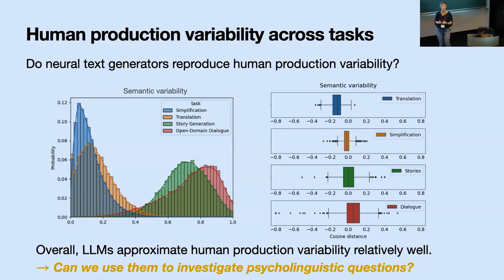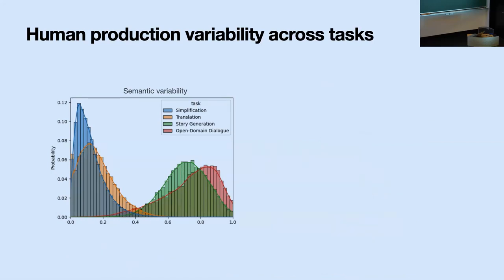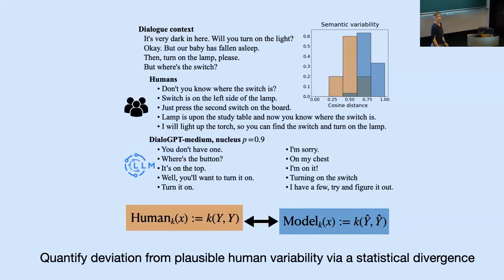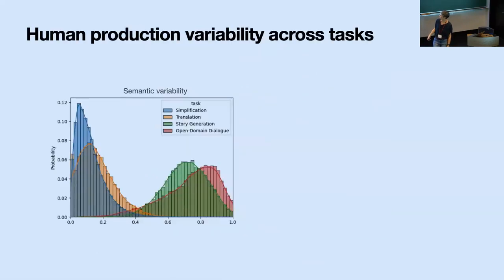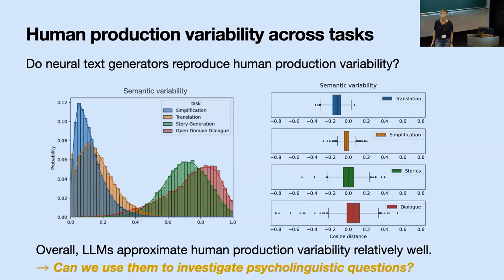An audience question raised whether humans rating the quality of LLM-generated responses would rate them highly. The answer is that quality has many dimensions towards what constitutes suitable generated text. This measure only taps on a particular dimension, so any additional evaluation would be very valuable — for example, understanding whether this variation also correlates with quality at other levels. We should not read more into this than what it is: it's really just quantifying variability; other things might still be pretty bad.